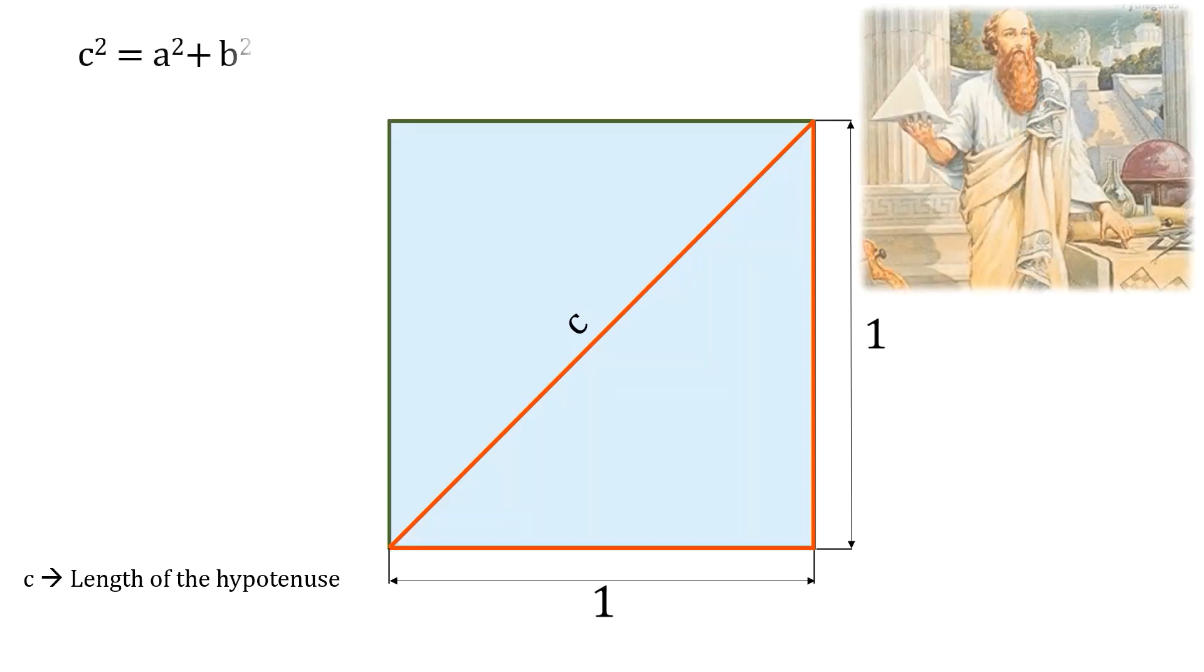However, the problem for them is with the length of its diagonals. But what could be the fuss about it? Let us try to calculate the length of this diagonal by considering the length of the sides to be one unit. As you might have realized that the diagonal and these two sides together can be treated as a right-angled triangle. In that case, the diagonal becomes the hypotenuse whose length is indicated here by the letter c.